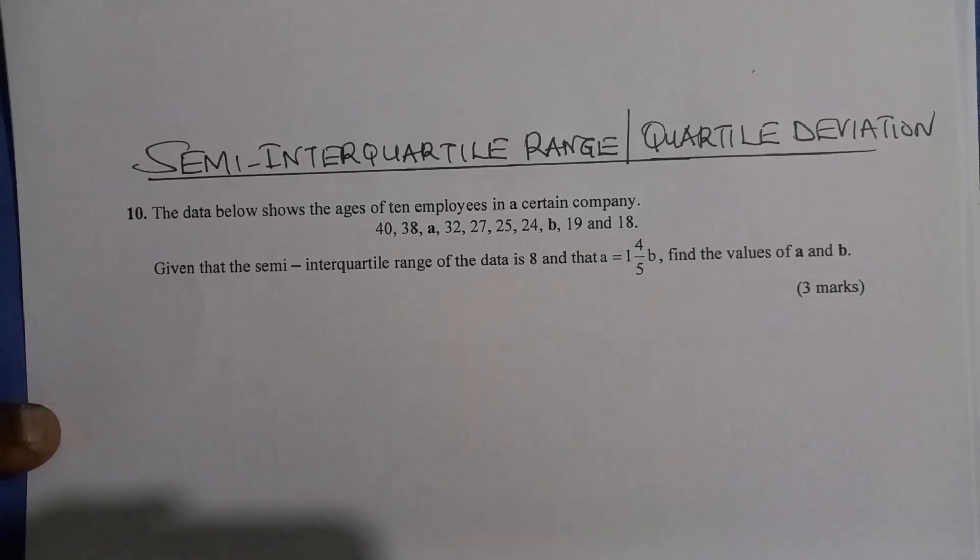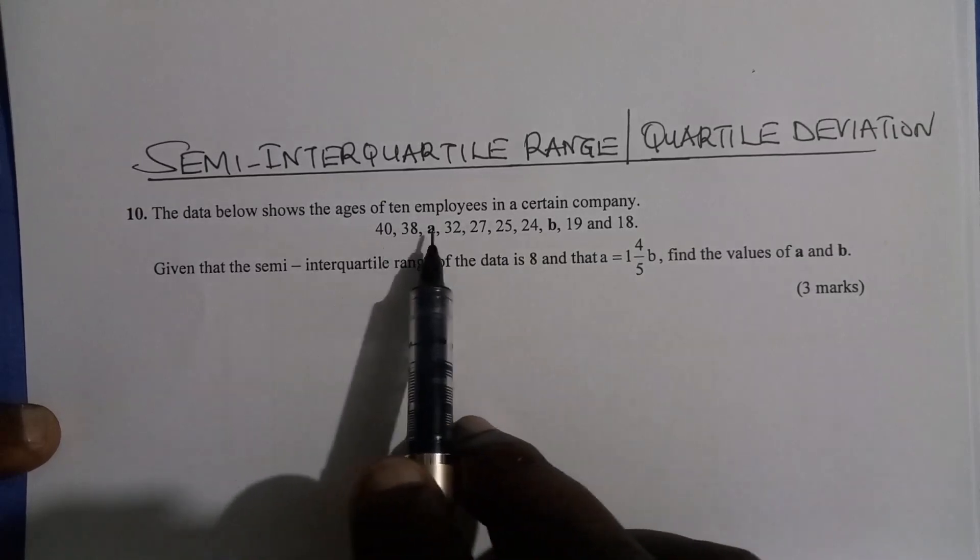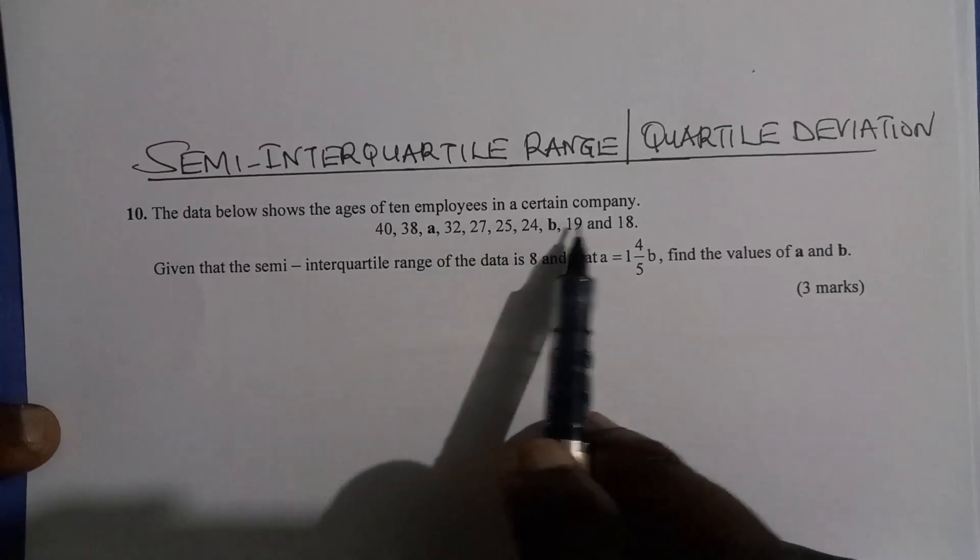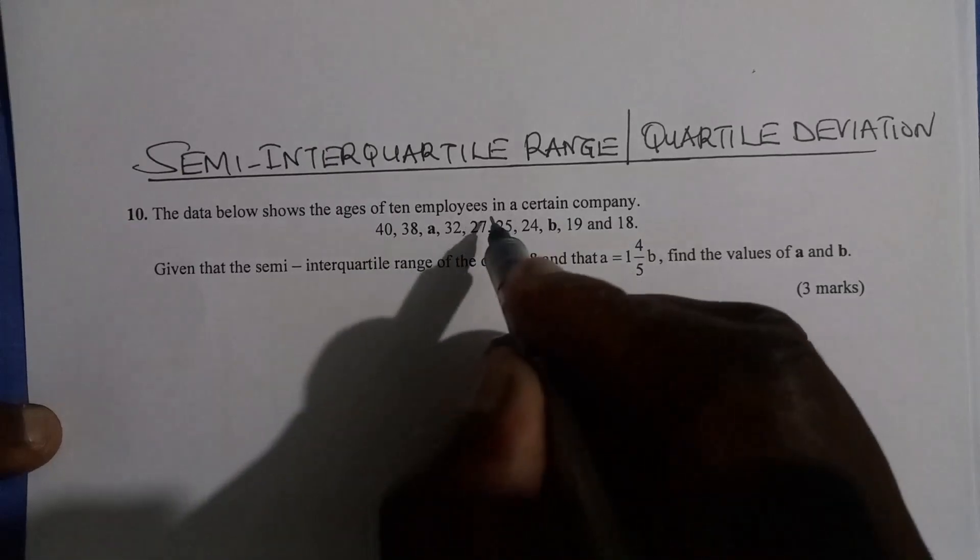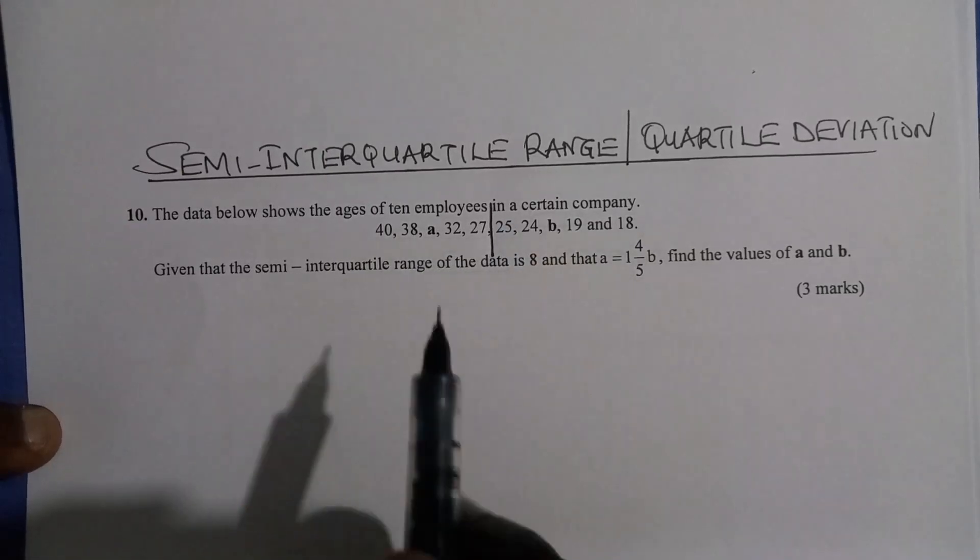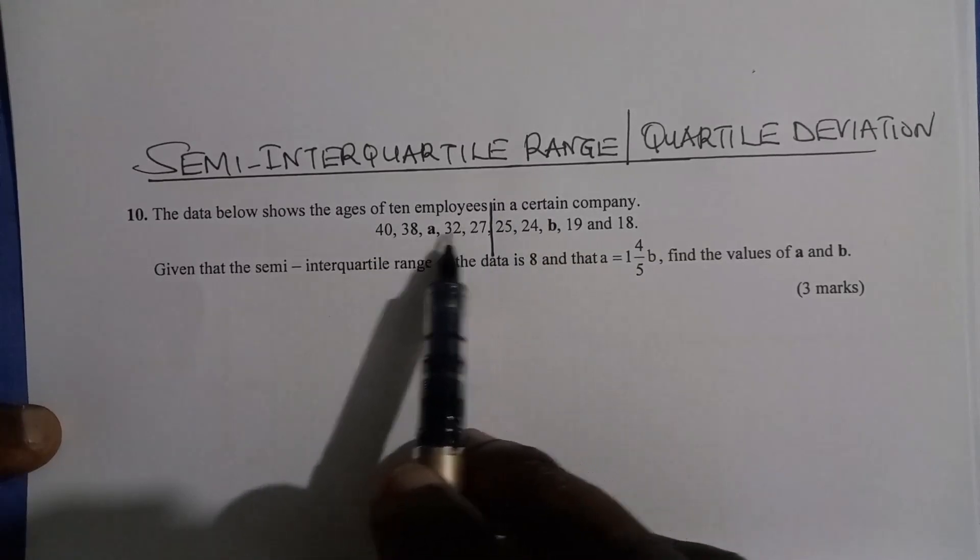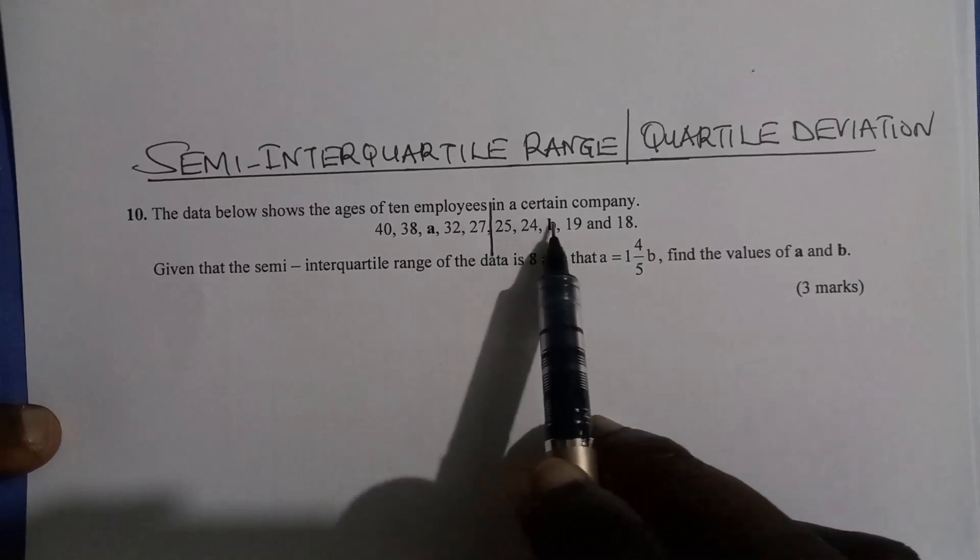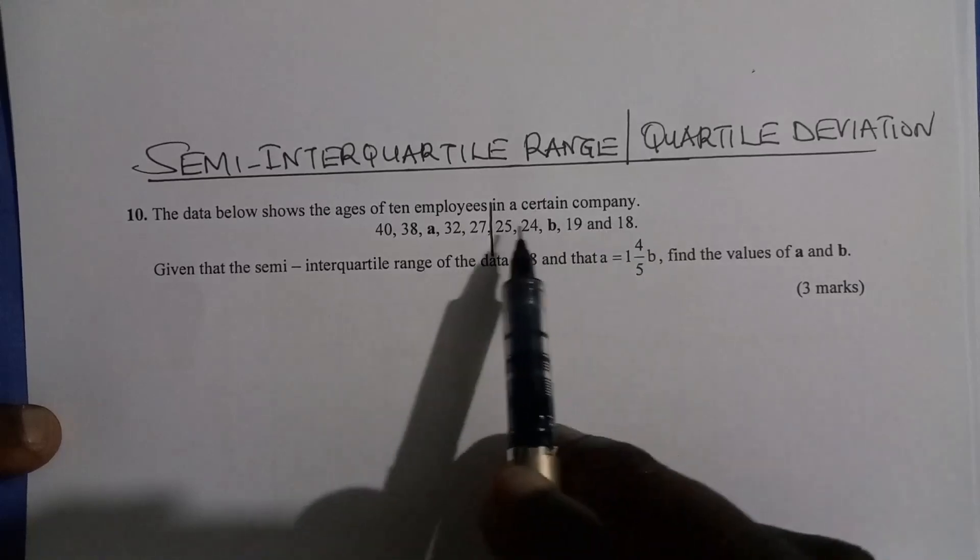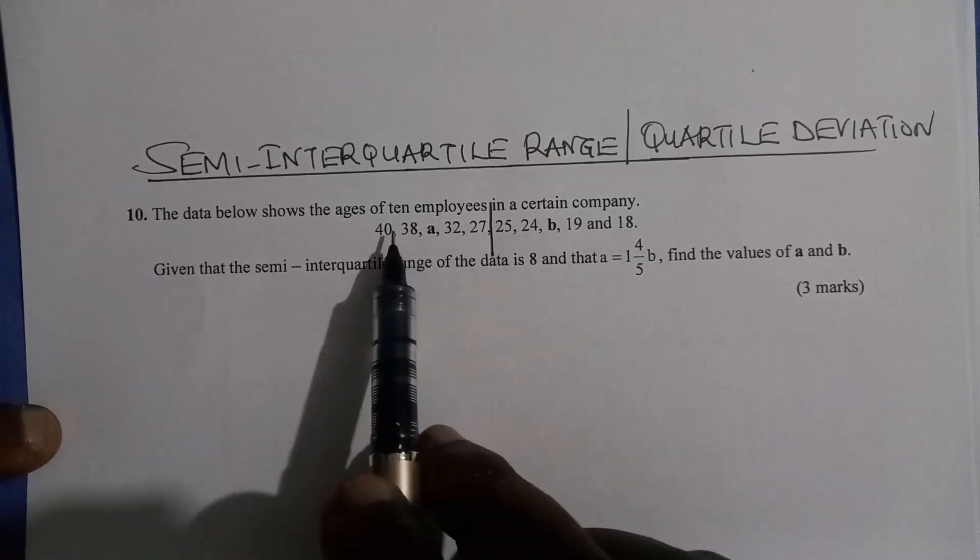The second thing you should do is divide that set of data into two halves. So I can see these are 1, 2, 3, 4, 5, 6, 7, 8, 9, 10 values. So I can divide exactly at the middle here so that I will have two halves. This is the upper half where we have big values. Then on the other right hand side is the lower half.